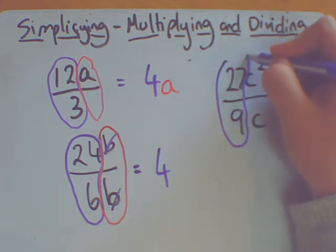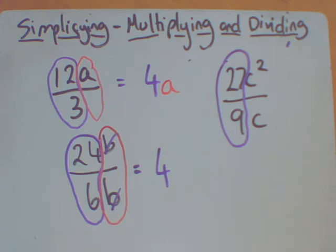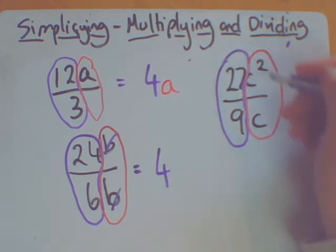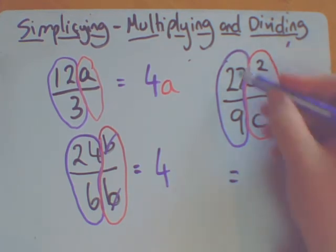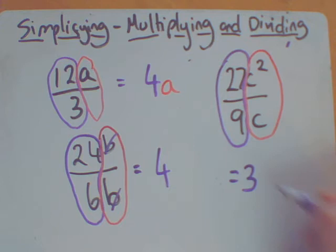So we've got the numbers here and we've got the letters there. So 27 divided by 9 is going to give me 3. And then for the letters, c squared divided by c, well when we did indices, dividing with subtracting, there's an invisible little one there. So 2 take 1 means I have a single c left. So my answer would be 3c.